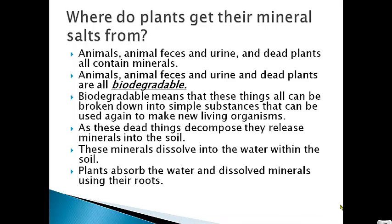So where do plants get their mineral salts from? Well, animals end up eating plants, and the plants have the minerals in them. As the animals eat plants, they defecate and urinate in different places, and that causes the minerals to come out through the feces and the urine and go back into the ground and seep back in.